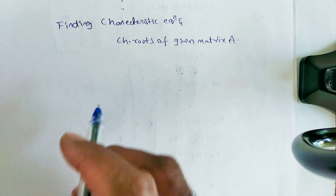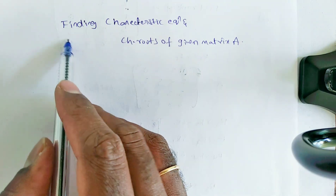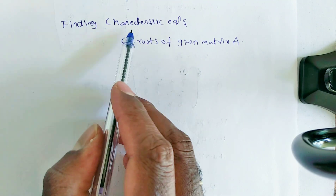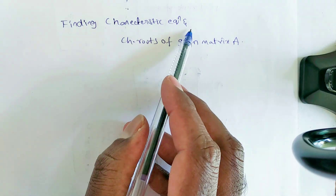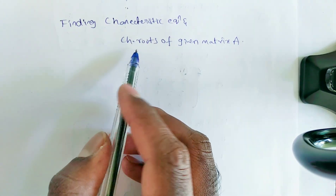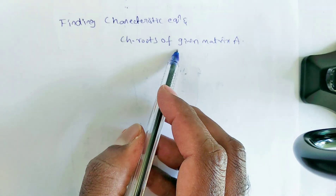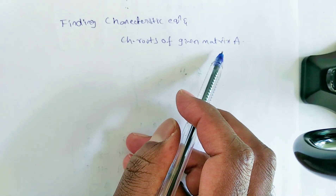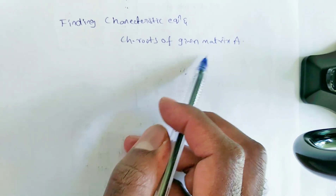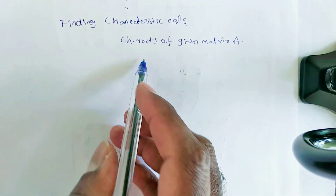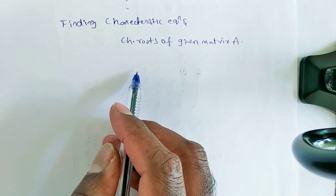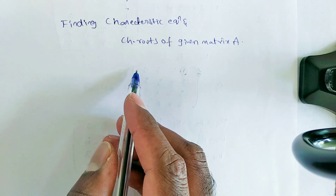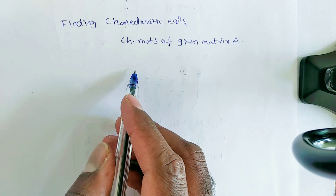Students, in this video we are discussing finding the characteristic equation and characteristic roots of the given matrix A. For this, we will use the calculator.